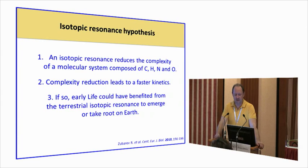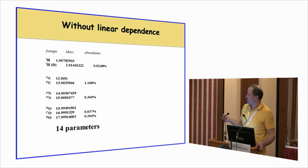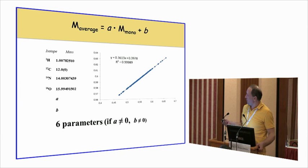We formulated this isotopic resonance hypothesis that postulated that if this feature has any meaning, that this meaning could be that it leads to increase of kinetics. And the increase of kinetics goes through the reduction of complexity. And if this is true, then early life has benefited from the presence of this terrestrial isotopic resonance. Indeed, where does the reduction of complexity come from? In order to describe a molecular mass containing CHON, you need 14 parameters. But if the molecules are on the line, you only need to know monoisotopic masses and the parameters of the line. Six parameters. And if the slope is equal to zero, then five. So there's a great reduction in complexity.